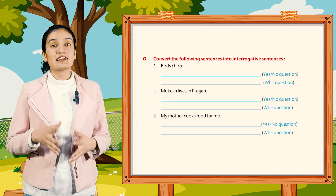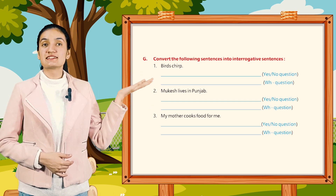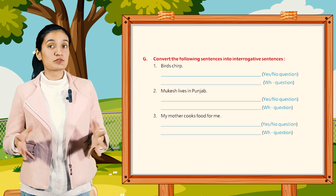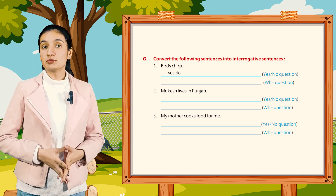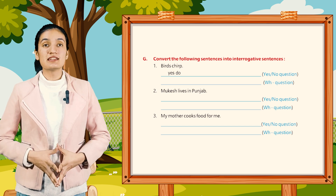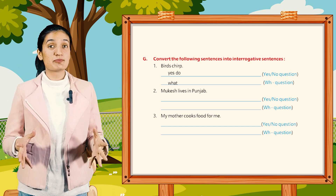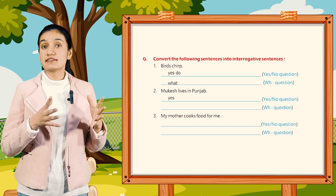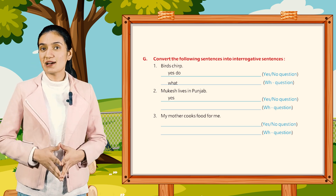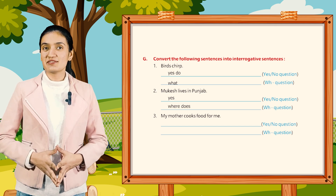Now Part G: convert the following sentences into interrogative sentences. First, birds chirp — yes/no question: do birds chirp? Wh-question: what do birds do? Second, Mukesh lives in Punjab — yes/no question: does Mukesh live in Punjab? Wh-question: where does Mukesh live?